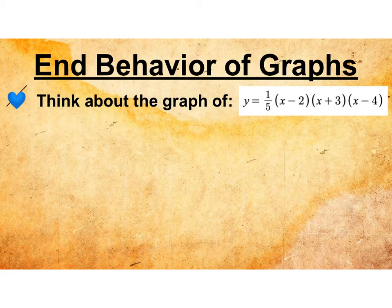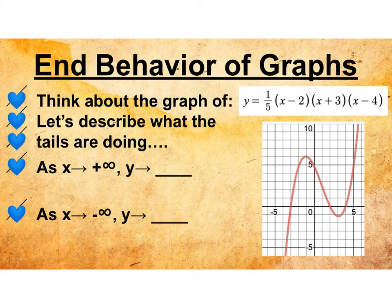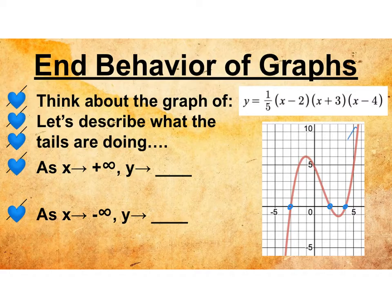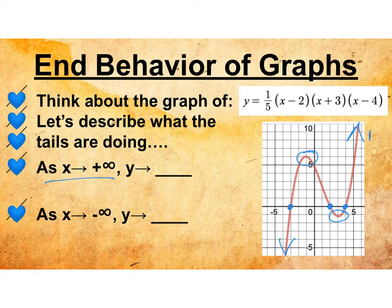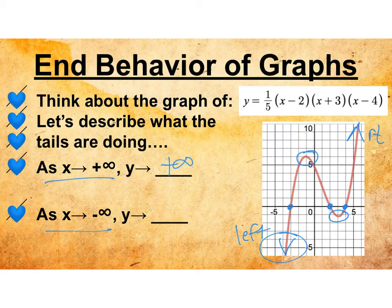Let's think about this graph — it's in factored form. If it crosses at x minus 2, that means it has an x-intercept at 2. x plus 3 means it has an x-intercept at negative 3. And x minus 4 means it has an intercept at 4. For today's lesson, we are concentrating on these ends, where the arrowheads would go. As x goes to positive infinity, that's my right tail — it's rising, so y is approaching positive infinity. As x goes to negative infinity, that's my left tail, and y is approaching negative infinity.